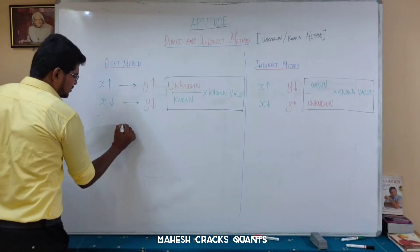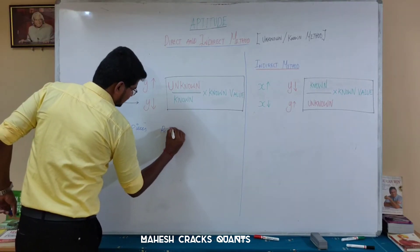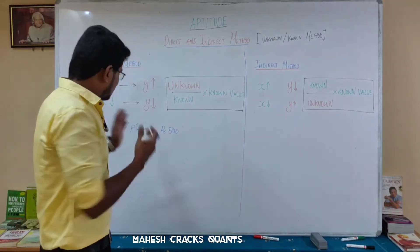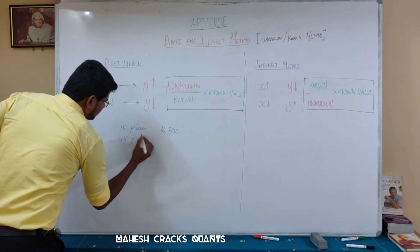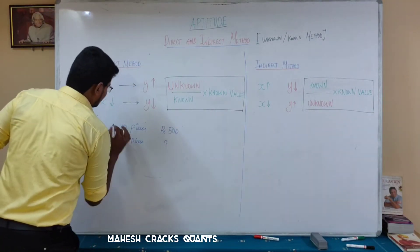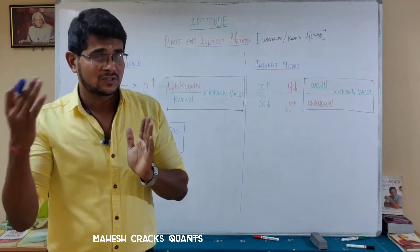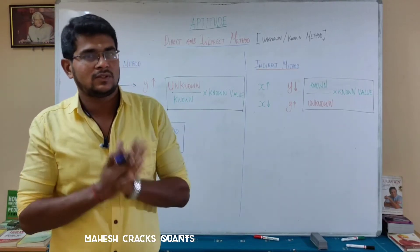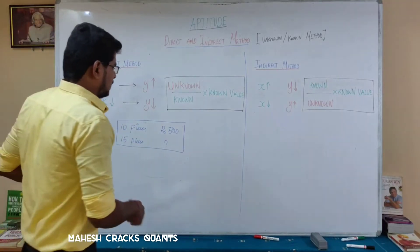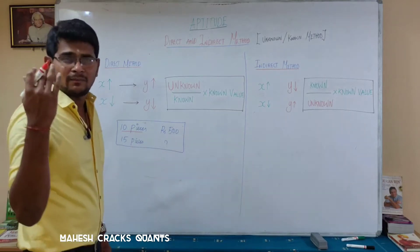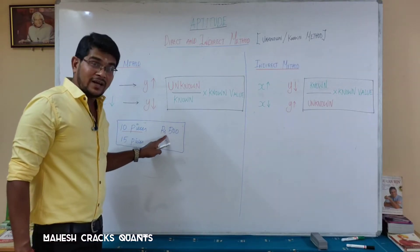Let's look at a direct method example. You are buying 10 pieces of chocolate for 500 rupees. The question is: if you need to purchase 15 pieces, how much money should you carry? First, identify known and unknown. For 10 pieces the price is known — 500 rupees. The price of 15 pieces is unknown.